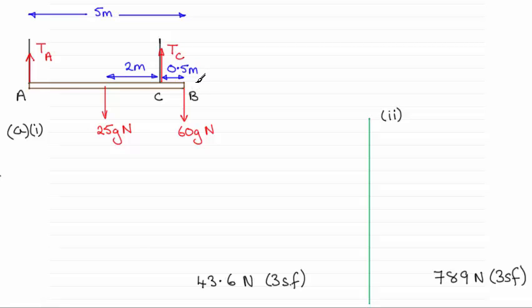The next thing we need to do in order to work out the tension in the rope at A is to take moments. It's a good idea to take moments about the point C because the force TC, that tension there, passes through what we would call the pivot or fulcrum. And it won't occur in the equation because it has no turning effect about the point C.